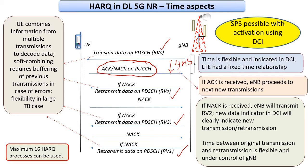We have a flexible time relationship between the data and HARQ — this is one major difference. There are a few other differences like the number of HARQ processes being increased over LTE. But the flexible timing of the ACK/NACK relative to when the data or allocation appeared is a very important difference.